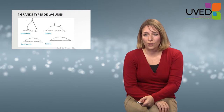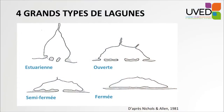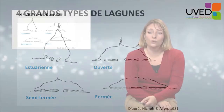The first type is the estuary lagoon, usually at the estuary of large rivers, communicating relatively freely with the sea, with a shape going inland. Then open estuaries or open lagoons with several river estuaries communicating with the sea. Then semi-closed lagoons with less contributions from the continent, and closed lagoons which are permanently or temporarily closed.